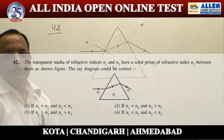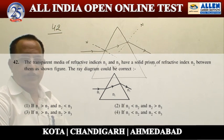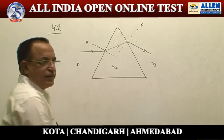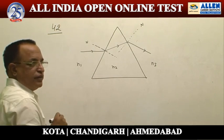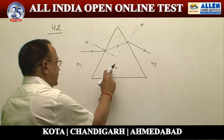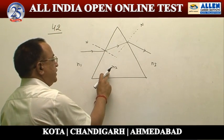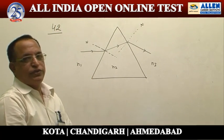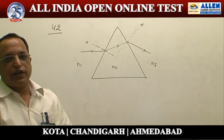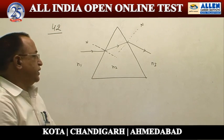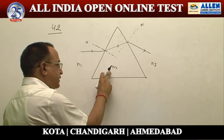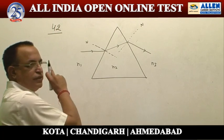Problem number 42 is related to the propagation of light through a prism. This ray is not going straight but moving away from the normal. As it is moving away from the normal, the refractive index of the prism material is less than the surrounding medium. Because when light goes from a denser medium to a rarer medium, it moves away from the normal. So we can conclude N2 is less than N1.